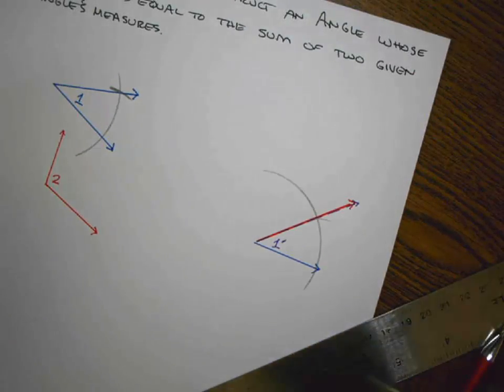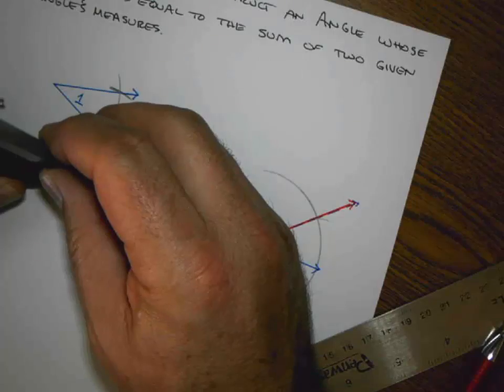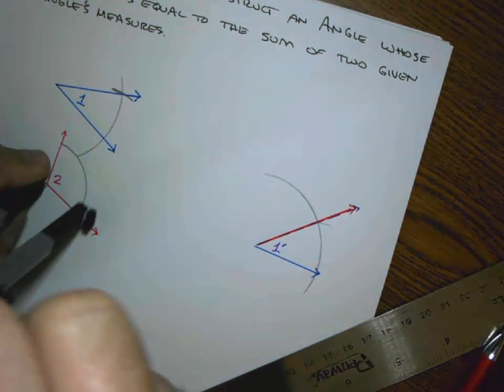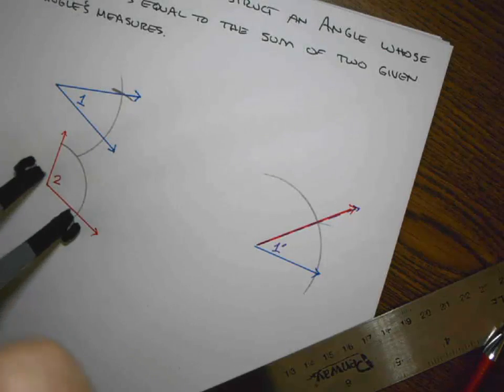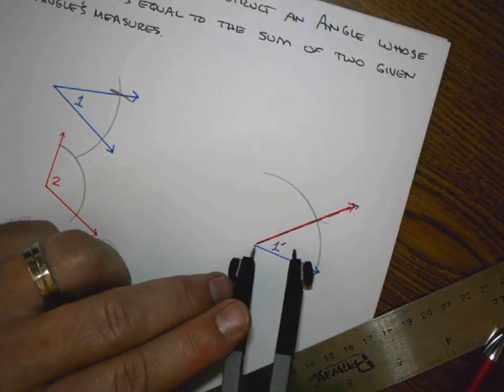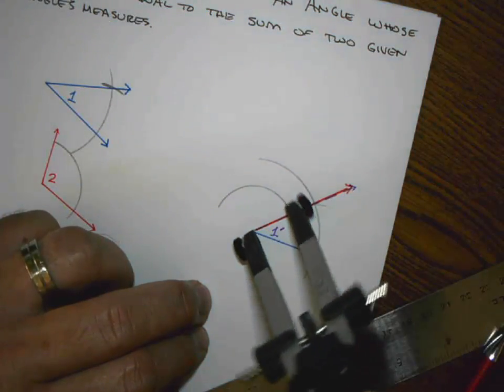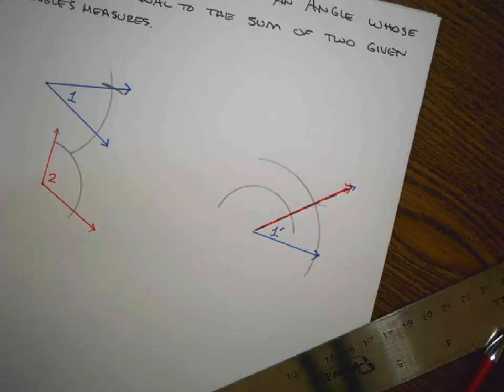Now I'm going to come back to my angle 2, use my compass to establish a baseline, an arc across this angle, such that when I drag it over here using the same vertex I did before, I'm going to make another arc on what will be my red angle.